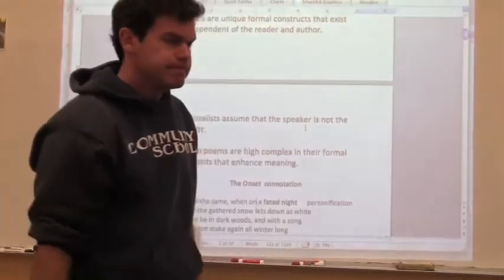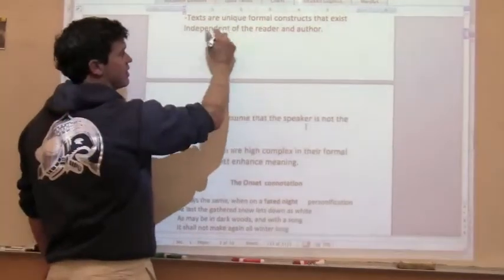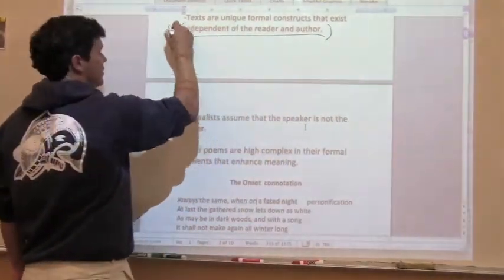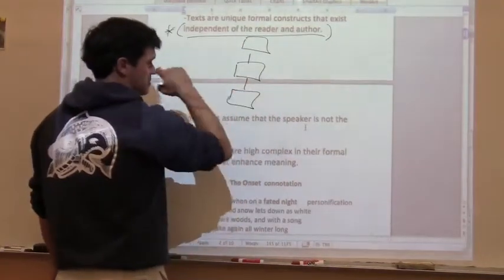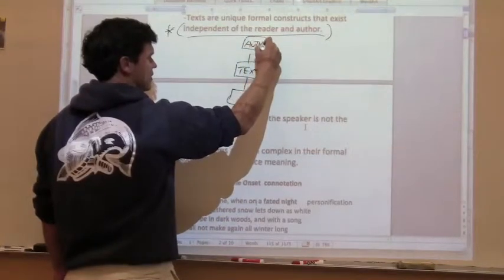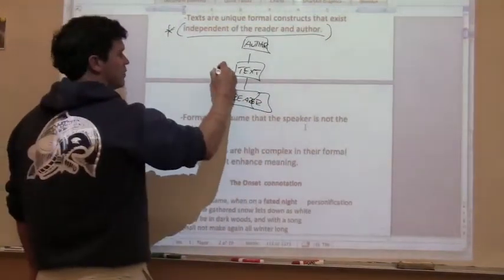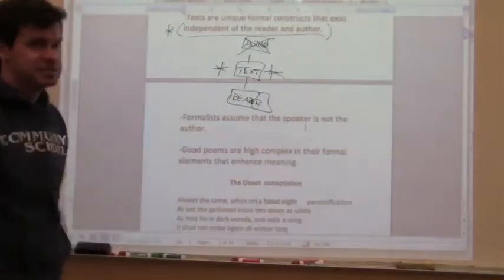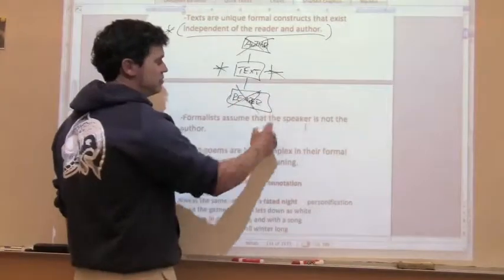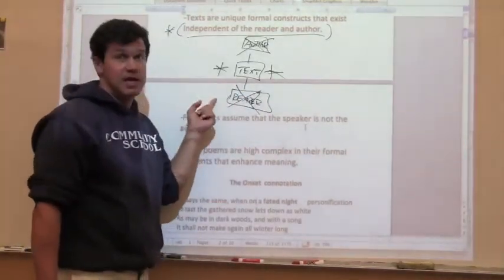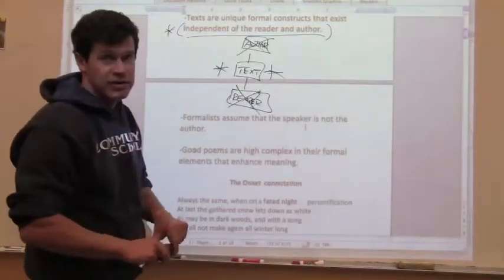A couple more things to think about. One of the assumptions that they make is that texts—short story, novel, poems—are unique formal constructs, and they are independent of the reader and the author. So the greatest determiner of meaning, out of these familiar boxes—text, author, and reader—the most important element for formalists is the text. It doesn't matter what the author said, it doesn't matter what literary period the author was writing in, it doesn't matter that biographical events may manifest themselves in texts. It doesn't matter what you bring to the poem, how you resonate with the poem, how your life experience informs and attracts you to certain lines and words and not others. For formalists, it's all about how the text is formed, how the devices cohere and create unity.